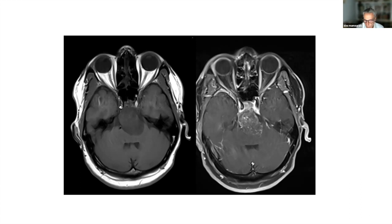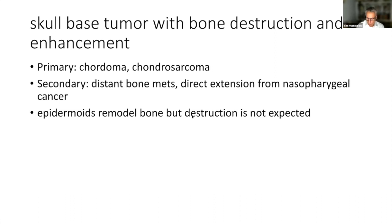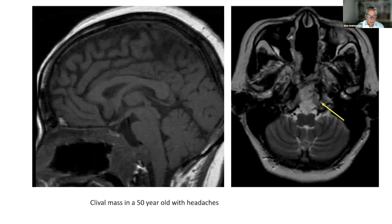The differentiating feature here is that this tumor, seen on the non-contrast T1-weighted image, shows enhancement — and you should never see this type of enhancement in an epidermoid. So the findings here would be most favorable for a chordoma. Notice that combination of very high signal intensity on the T2-weighted scan along with enhancement. The main primary tumors to consider with bone destruction and enhancement are chordomas and chondrosarcomas, and secondarily, bone metastatic disease and direct extension from nasopharyngeal cancer. Epidermoids tend to remodel bone; frank destruction is not expected.